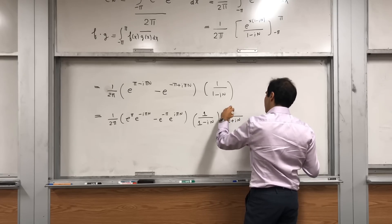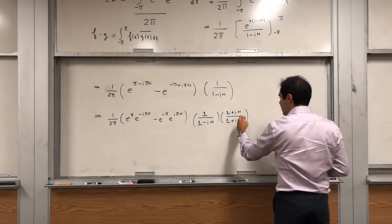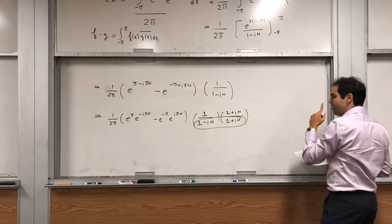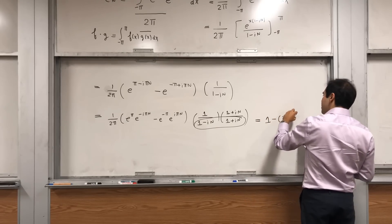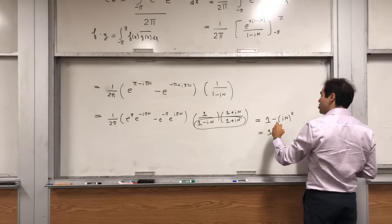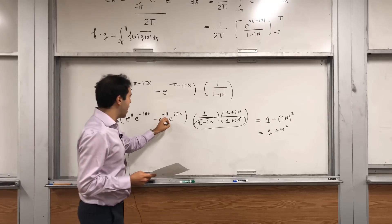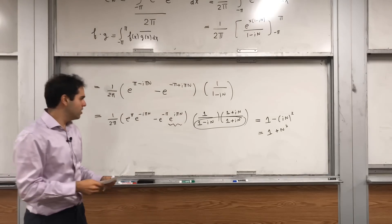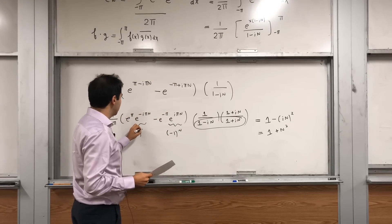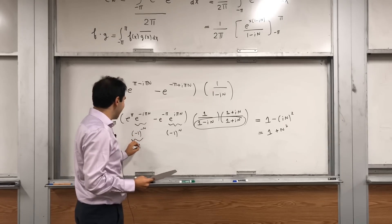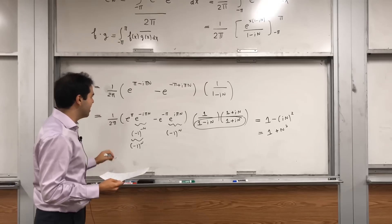Then on the denominator, (1 minus in)(1 plus in) is like a squared minus b squared, giving us 1 minus i² n squared, which becomes 1 plus n squared. And e to the i pi n is just plus or minus 1, so it's minus 1 to the n. Similarly, e to the minus i pi n equals minus 1 to the minus n, which is the same as minus 1 to the n. So we can factor that out.